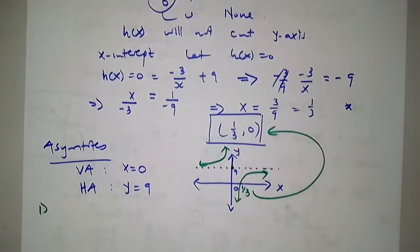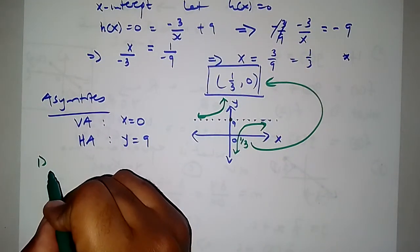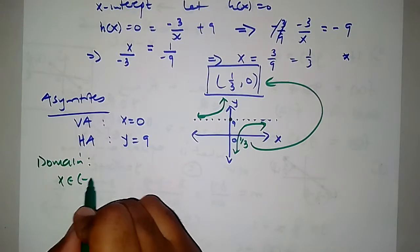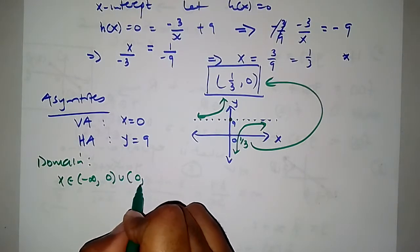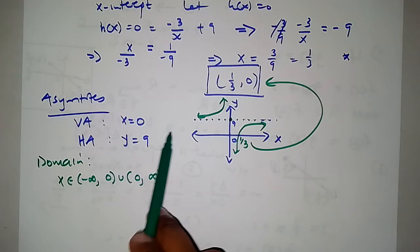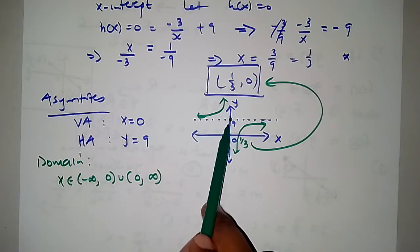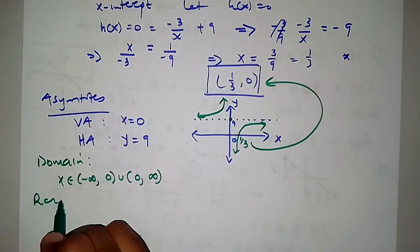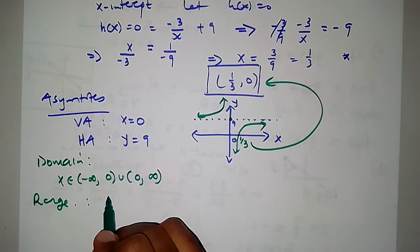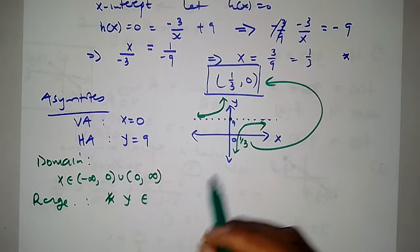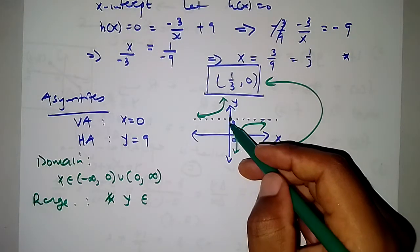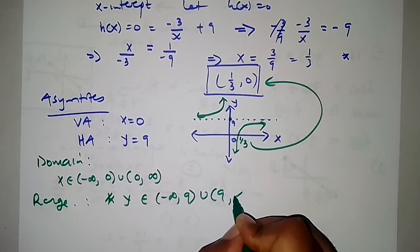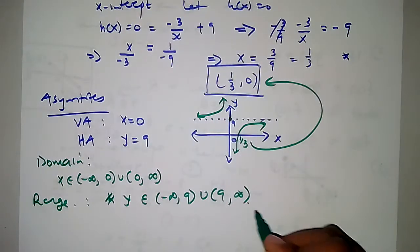The domain: the function exists from negative infinity until 0, not including 0, and then from 0 to positive infinity — so x is an element of real numbers, x not equal to 0. The range: y goes from negative infinity up through 0 all the way to 9 — not including 9 — and then from 9 upwards to positive infinity. So f of x cannot equal 9. This is the range of the function.